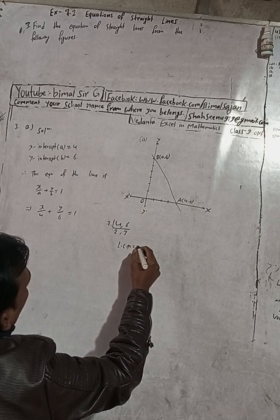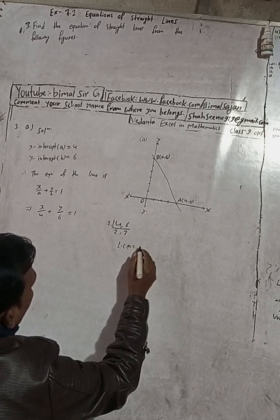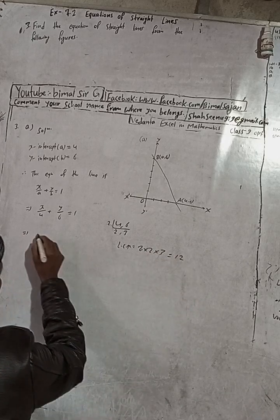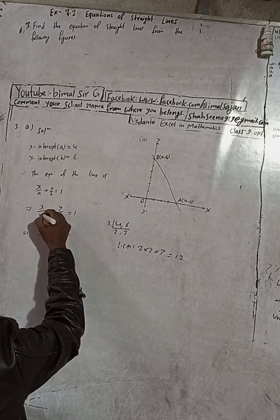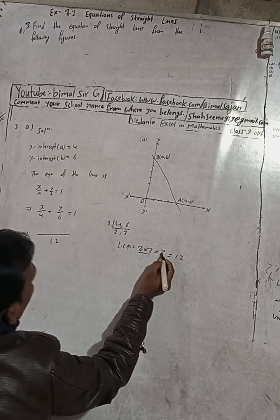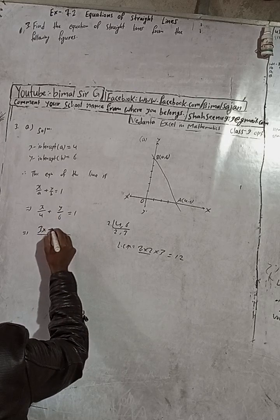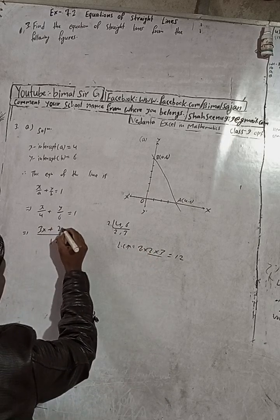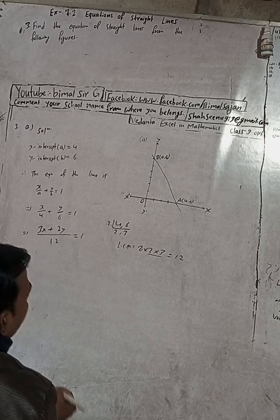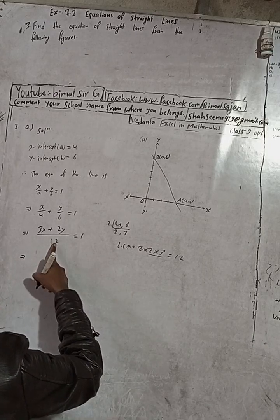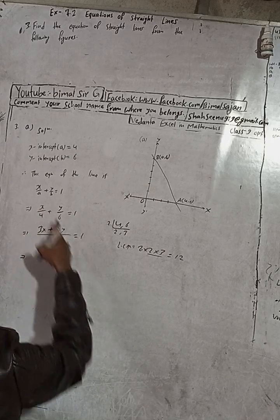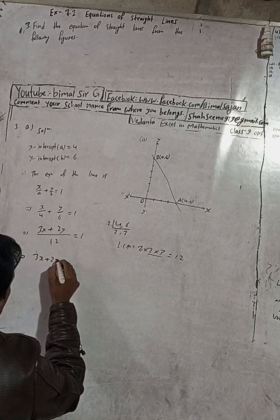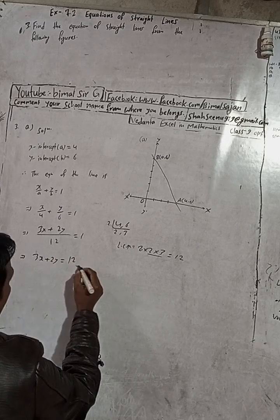LCM of 4 and 6 is 12. Now multiply through: divide 12 by 4 gives 3, so multiply x by 3; divide 12 by 6 gives 2, so multiply y by 2. This gives 3x + 2y = 12 × 1 = 12. So the required equation is 3x + 2y = 12.